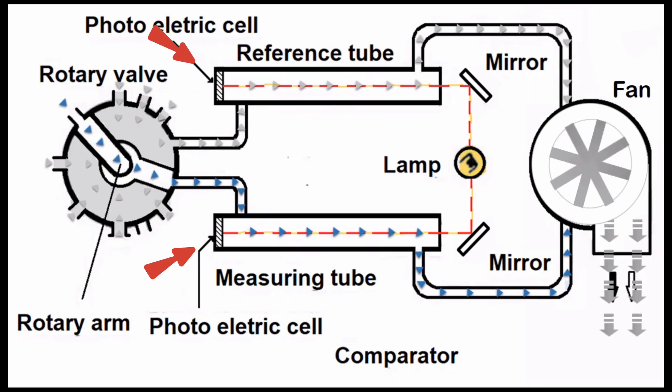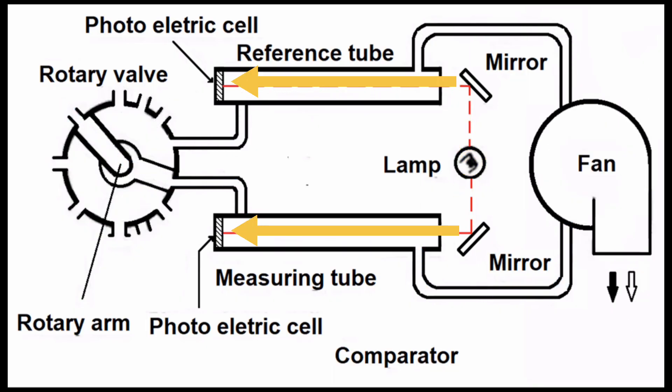At one end of each tube, a photoelectric cell is fixed. Photoelectric cells generate an electric current when light falls on their surface. The amount of electric current generated is directly proportional to the intensity of light falling on it.